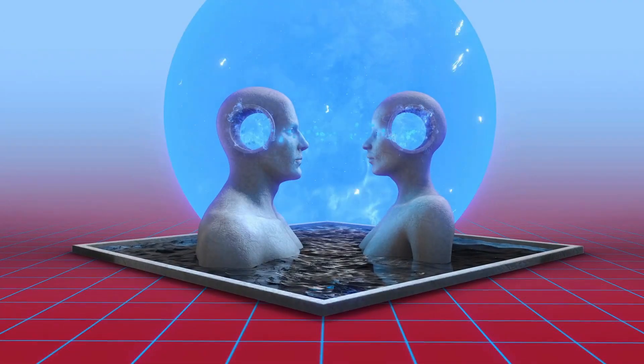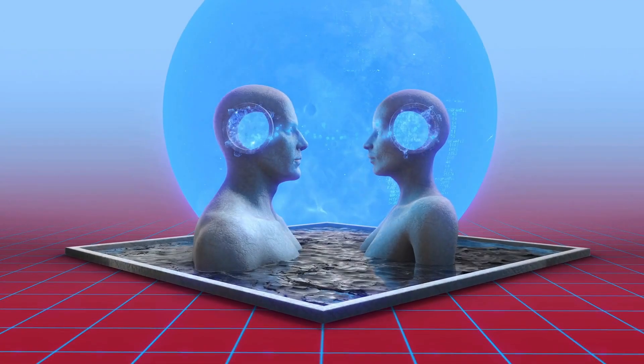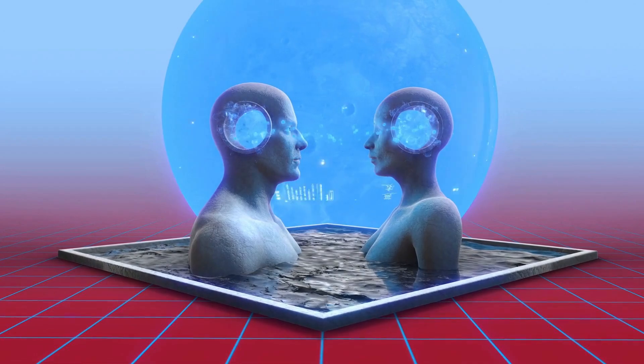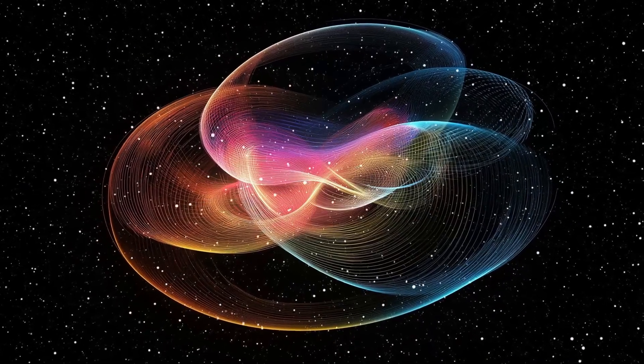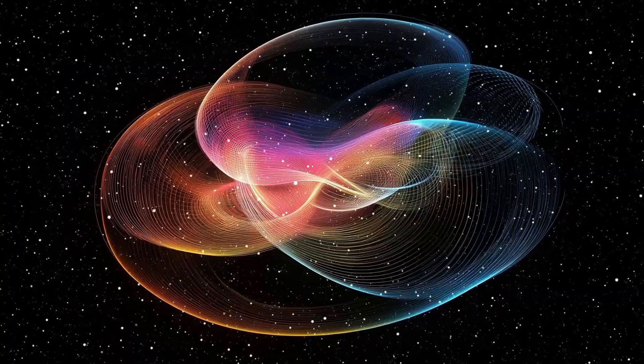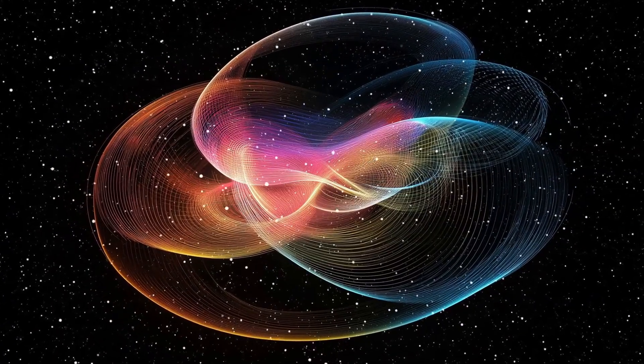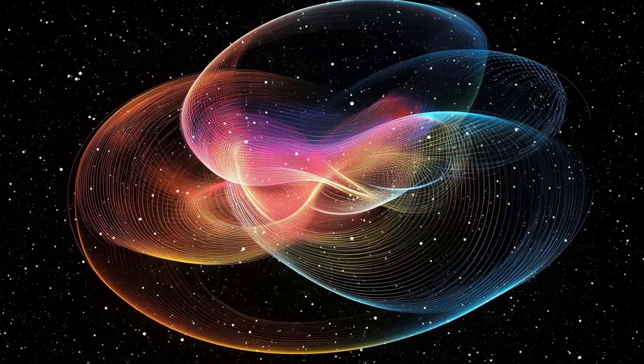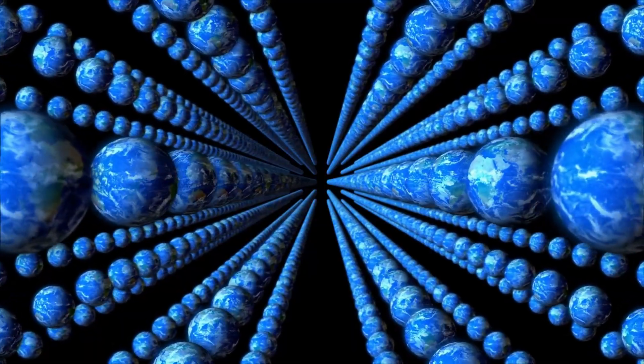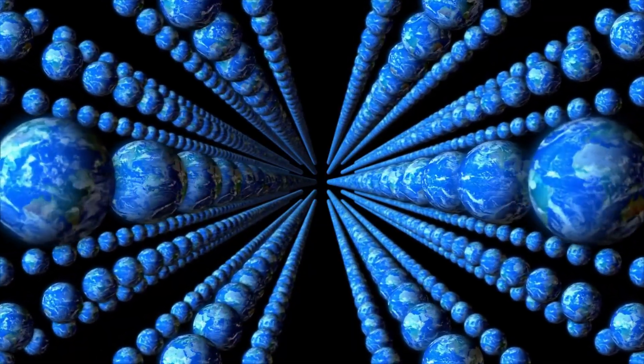Everett proposed something radical. They don't go anywhere. Every possible outcome happens, each in its own parallel universe. When you measure that electron, the universe splits. In one universe, you see it spinning up. In another universe, another you sees it spinning down. Both universes are equally real, equally valid. The universe doesn't choose. It does everything.